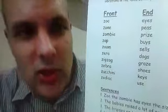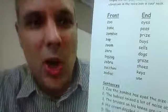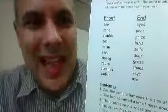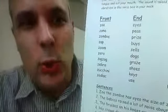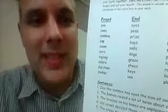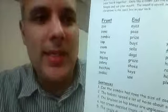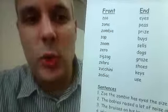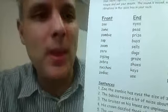So here, zoo, zoo, zone, zombie, zap, zoom, zero, zigzag, zebra, zucchini, and zodiac, zodiac. So make sure all of them have Z.